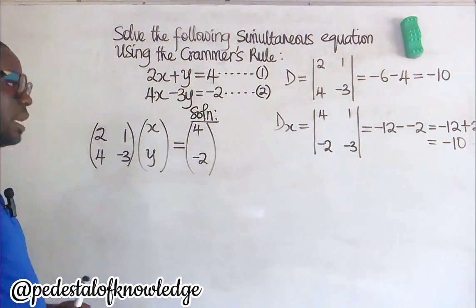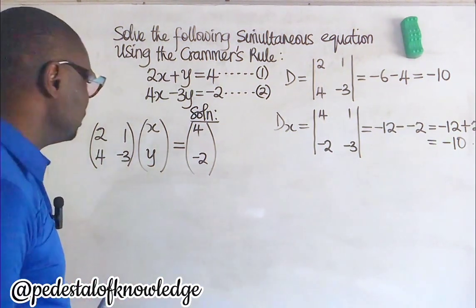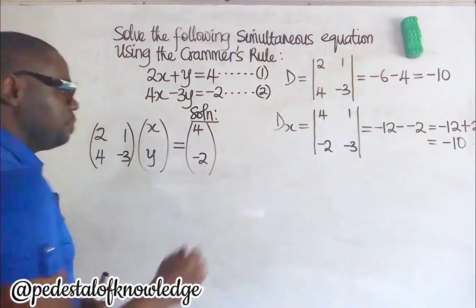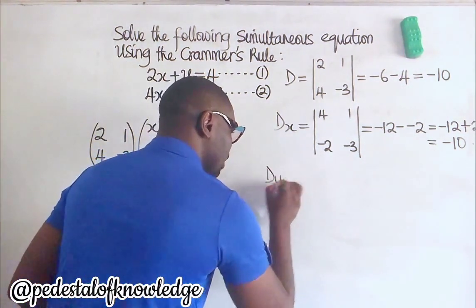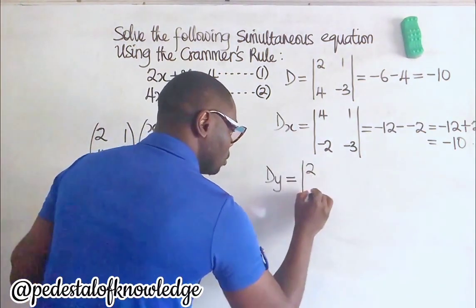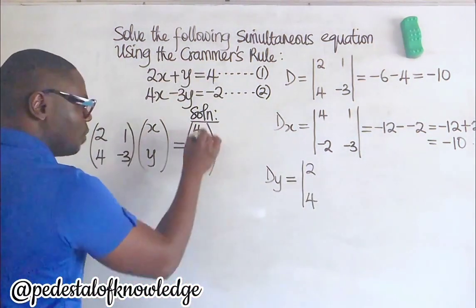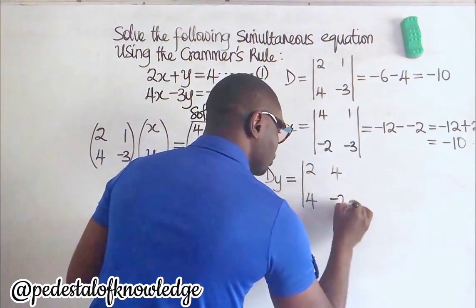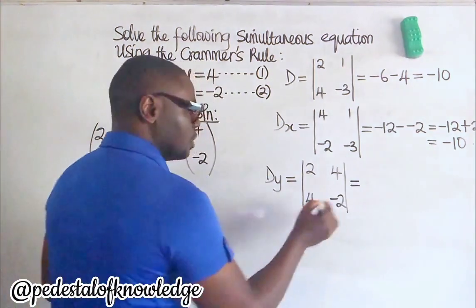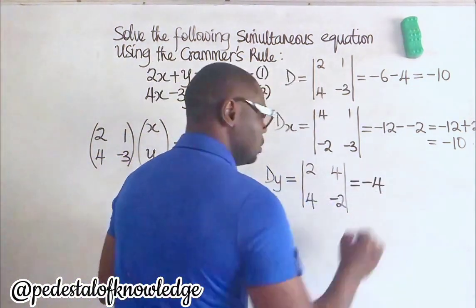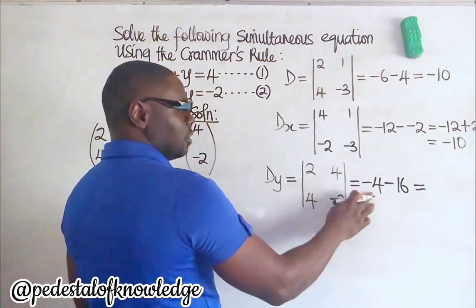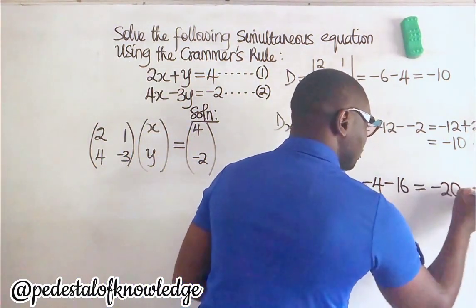Now let us find the determinant of the matrix of Y. Remember that the matrix of Y is obtained by replacing the second column with the matrix of the constants. So the determinant of the matrix of Y has 2 and 4 in the first column, and we replace the second column with 4 and minus 2. This determinant is equal to minus 2 times 2, which gives us minus 4, then minus 4 times 4, which gives us 16. So minus 4 minus 16 gives us minus 20.